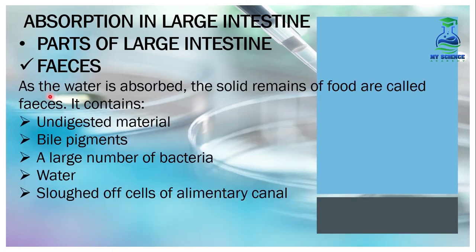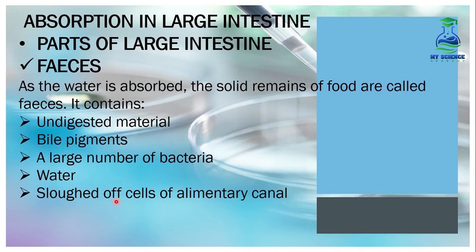As water is absorbed, the solid remains of food are called feces. Feces contain undigested material of food, bile pigments, a large number of bacteria, water, and sloughed-off cells of the alimentary canal — meaning the dead or shed cells from the walls of the alimentary canal.